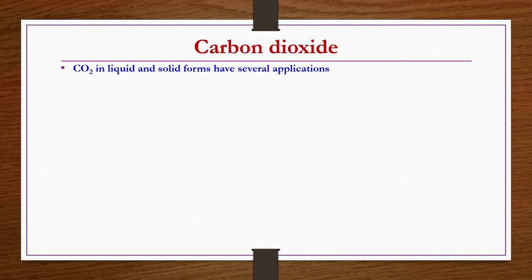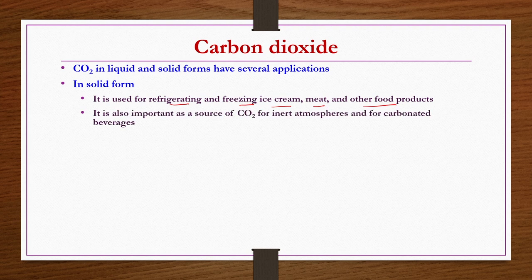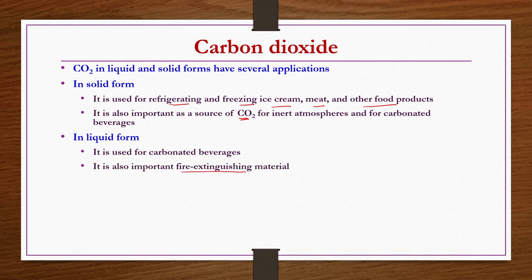Carbon dioxide in liquid and solid forms has several applications. In solid form, it is used for refrigerating and freezing ice cream, meat, and other food products. It is also important as a source of CO2 for inert atmospheres and carbonated beverages. In liquid form, it is used for carbonated beverages and as a fire extinguishing material.